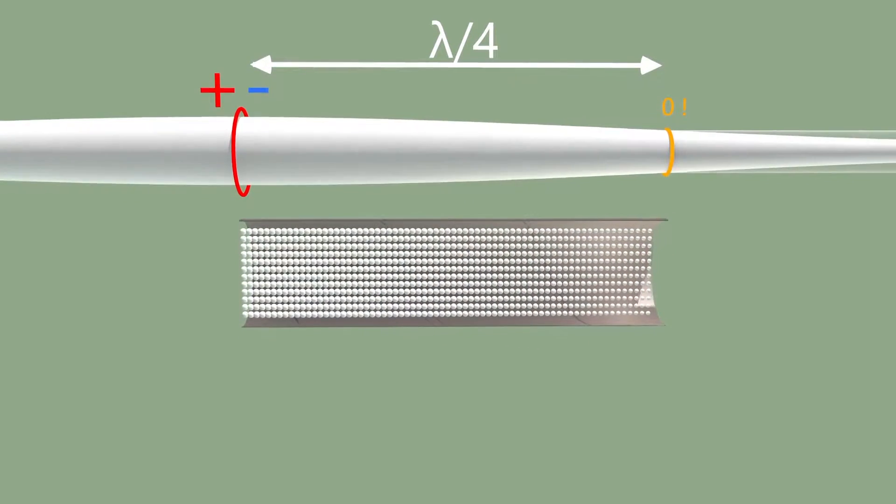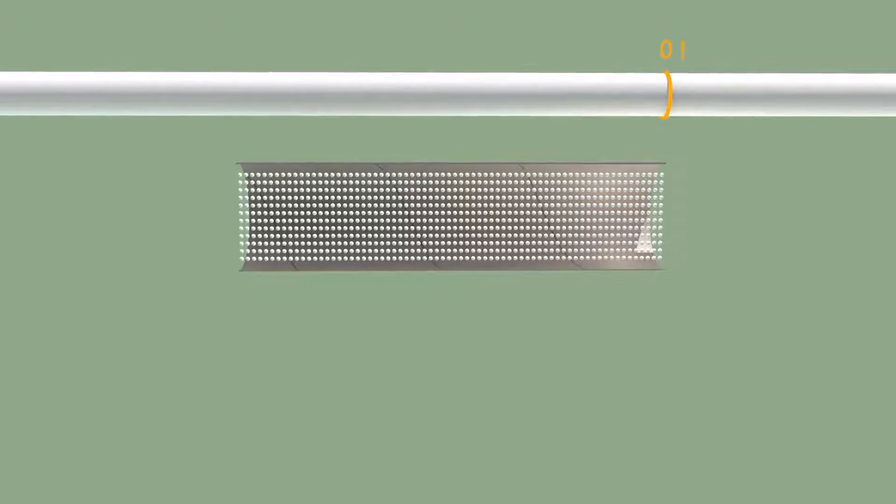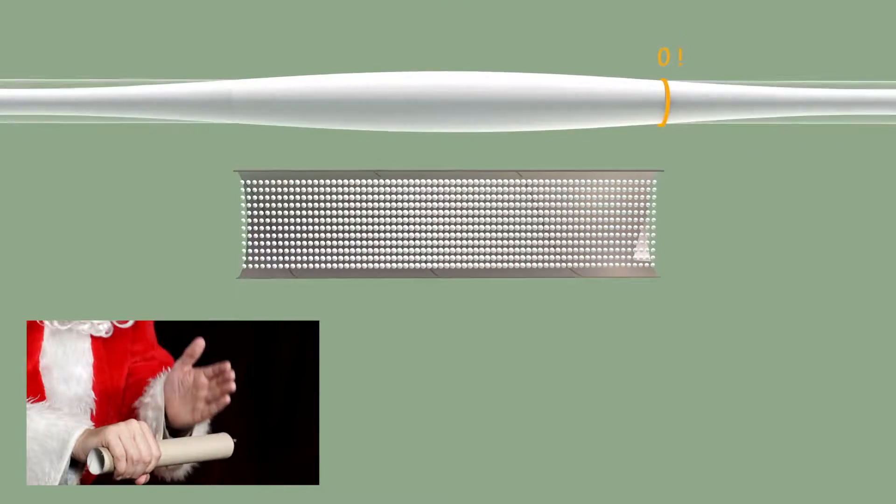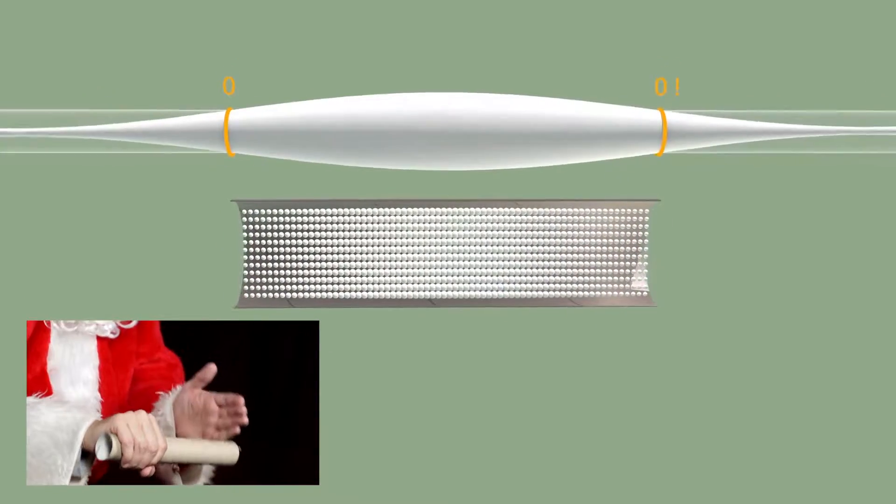An example: a quarter wavelength, lambda over four. With a karate chop to the left side of the tube, this side is open where there is a wave node as well as on the right end.